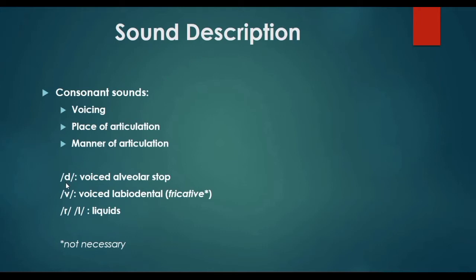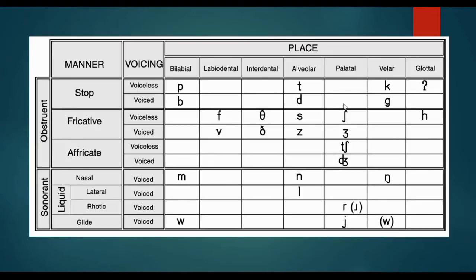For example, we have the sound /d/. This is the order we need to follow to name those sounds. The first feature is voicing — /d/ is voiced. According to place of articulation, this sound is alveolar. And according to manner of articulation, /d/ is a stop sound. Looking at the chart: /d/ is voiced, alveolar, and stop. This is the order we follow to name the different consonant sounds.